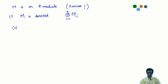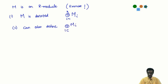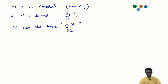One can actually define direct sums even for infinite collections of modules. When i ranges over a potentially infinite indexing set, the direct sum turns out not to equal the product as a set. For an infinite collection, the direct sum is a certain subset of the product in which only finitely many of the entries are allowed to be non-zero. We won't encounter this in this course.